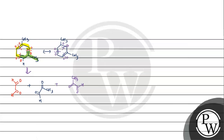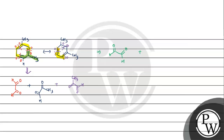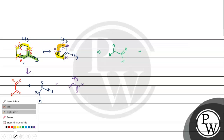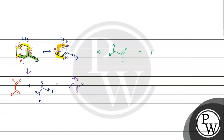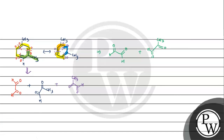We look at this part and identify what products we want. Here is one fragment. Then we have the last part — let's identify what each part gives.